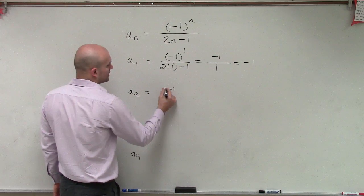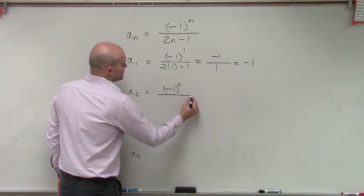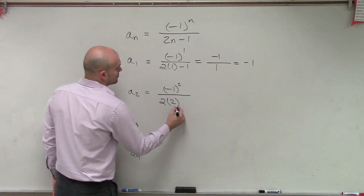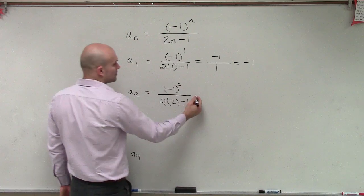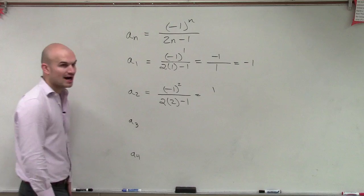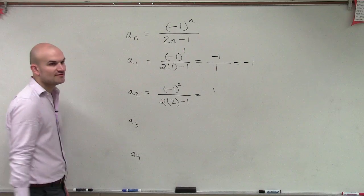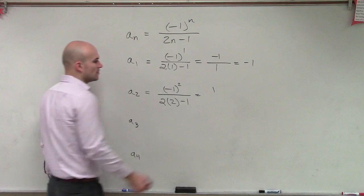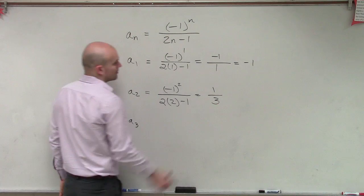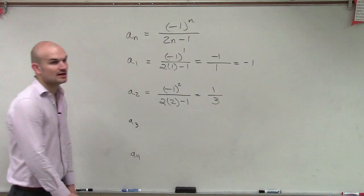So here we have negative 1 squared divided by 2 times 2 minus 1. So negative 1 squared, we now understand, is going to be a positive 1. 2 times 2 is 4 minus 1 is 3. And there ends up being our simplified answer.